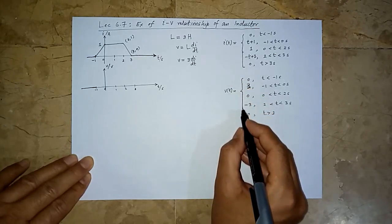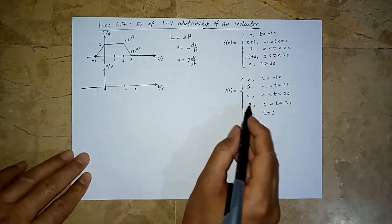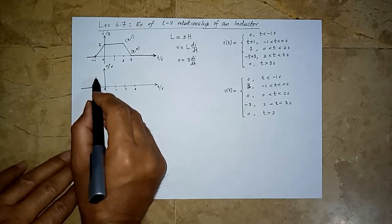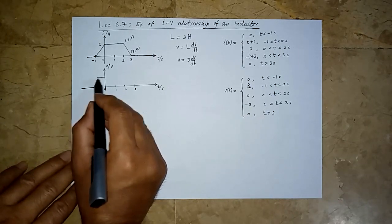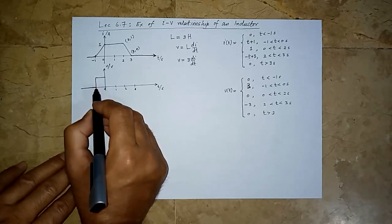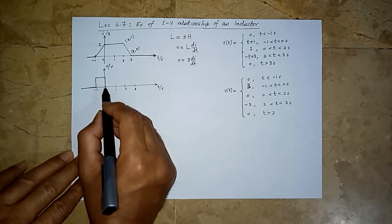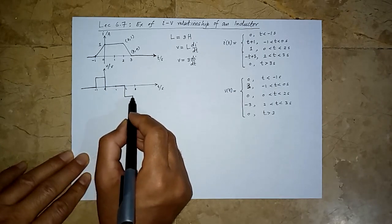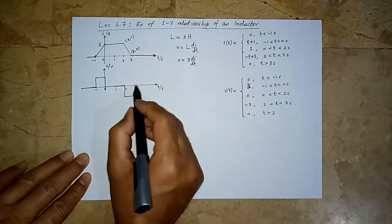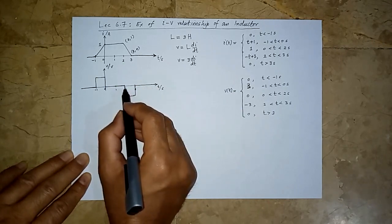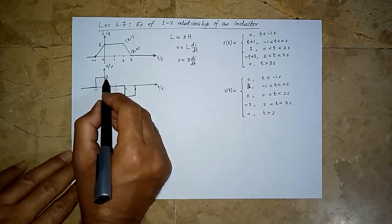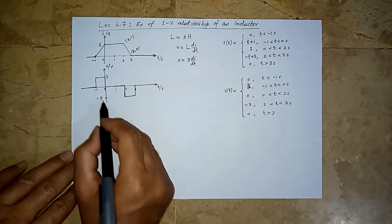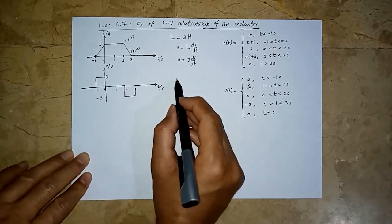We get the voltage as this piecewise function. Plotting it: between minus 1 and 0 it is 3 volts, it is 0 between 0 and 2, and it is minus 3 between 2 and 3, and 0 afterwards. This is how the voltage appears across the inductor.